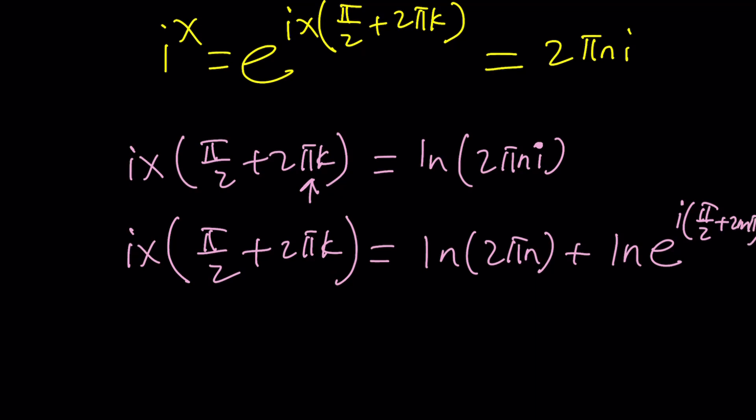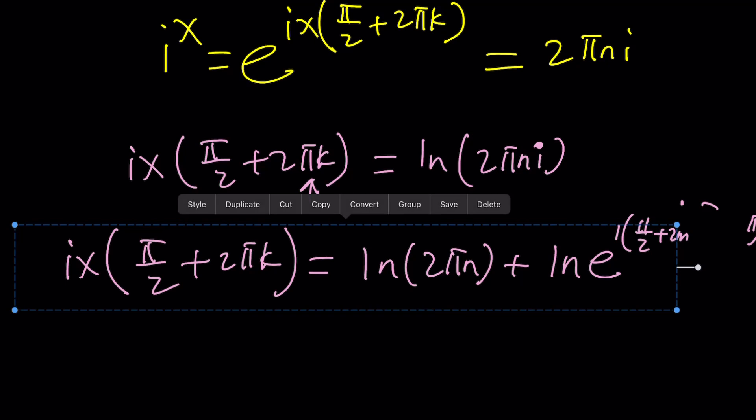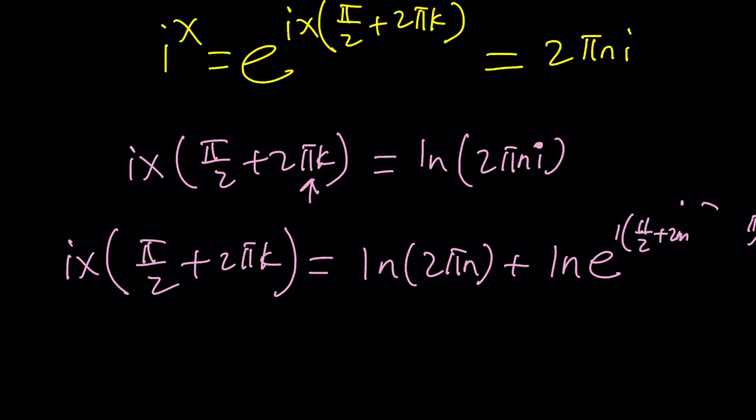So let's go ahead and do that. ix multiplied by pi over 2 plus 2 pi k. And then I'm going to separate it into ln 2 pi n plus ln i, which can be written as e to the power i times pi over 2 plus 2m pi. And that will be it. Let's go ahead and move this over here. Now, I can move this to the front. That's going to give me ln e, which is 1. So that's good.